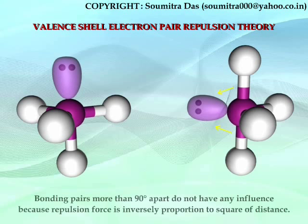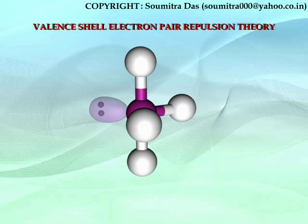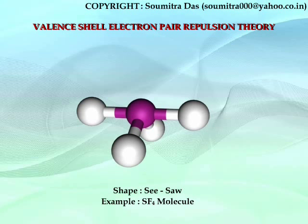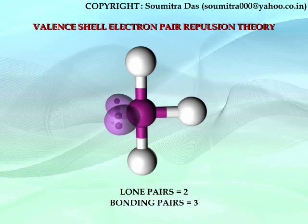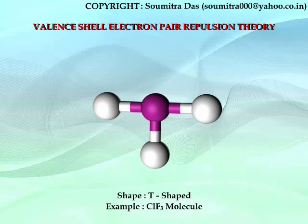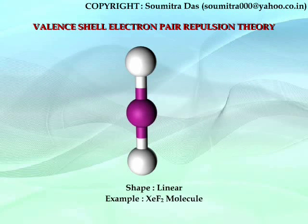In the equatorial position, the lone pair is repelled by 2 bond pairs only, whereas in the axial position, it is repelled by 3 bond pairs. So the lone pair always occupies the equatorial position. Since the lone pair does not contribute to the shape, the shape in this case will be seesaw. If there are 2 lone pairs and 3 bonding pairs, both lone pairs occupy the equatorial positions and the shape is T-shaped. When there are 3 lone pairs, they all occupy the equatorial positions and the shape becomes linear.